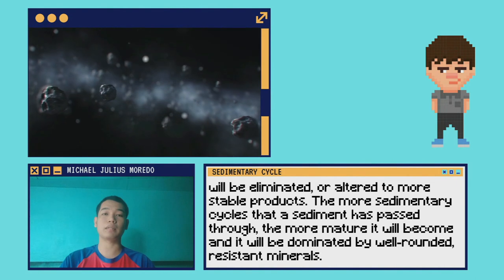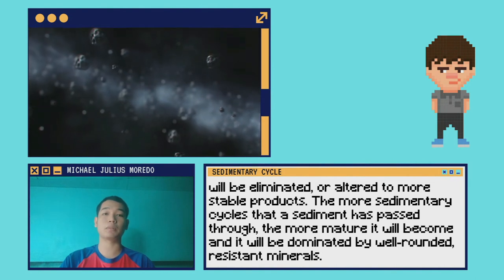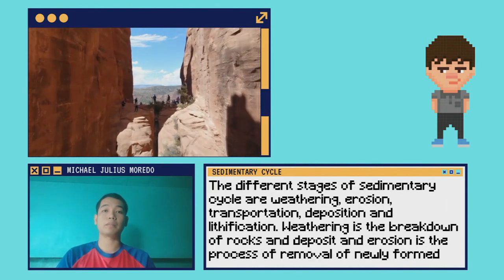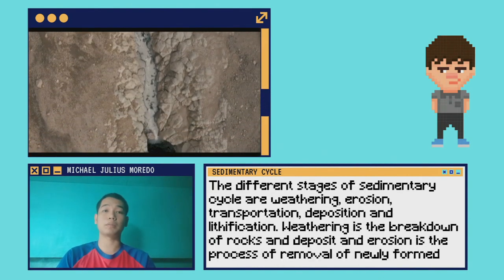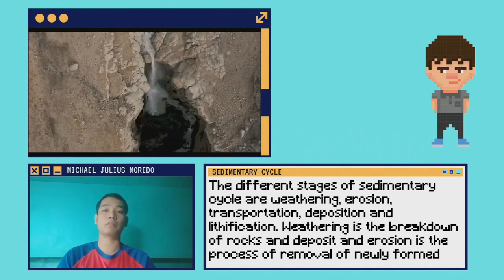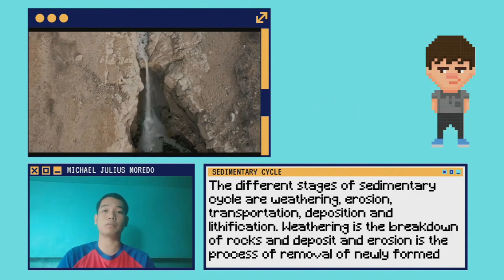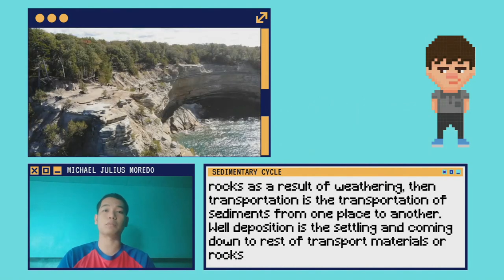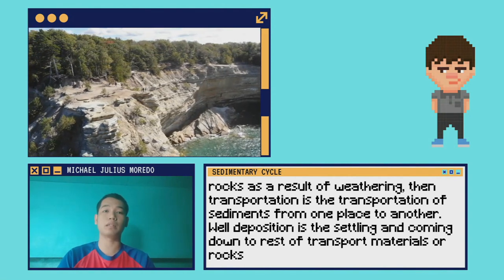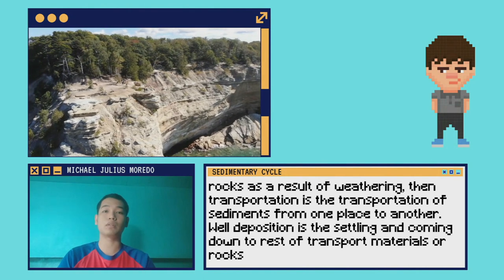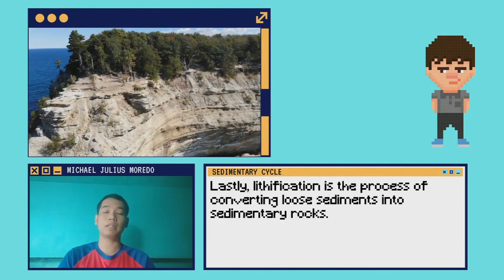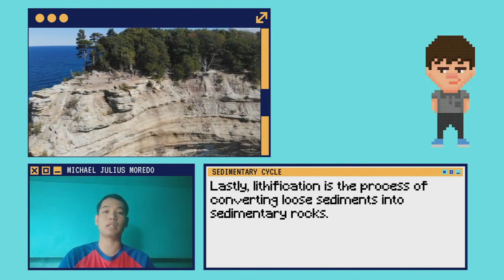The more sedimentary cycles that the sediment has passed through, the more mature it will become, and it will be dominated by well-rounded resistant minerals. The different stages of the sedimentary cycle are weathering, erosion, transportation, deposition, and lithification. Weathering is the breakdown of rocks and deposits, while erosion is the removal of newly formed rocks as a result of weathering. Transportation is the movement of sediments from one place to another, while deposition is the settling of transported materials. Lastly, lithification is the process of converting loose sediments into sedimentary rocks.